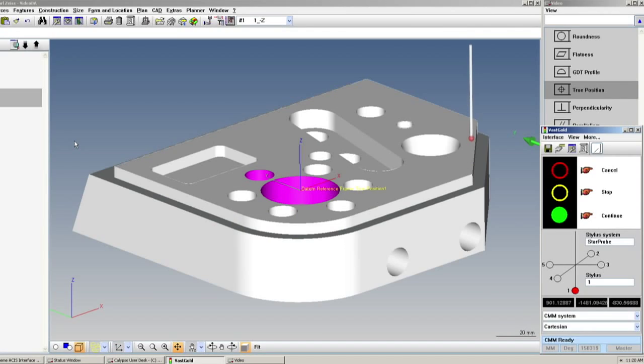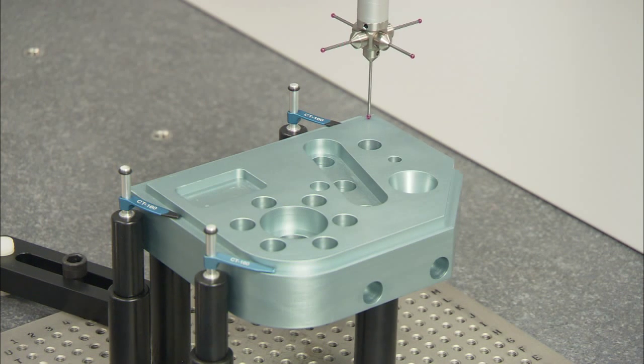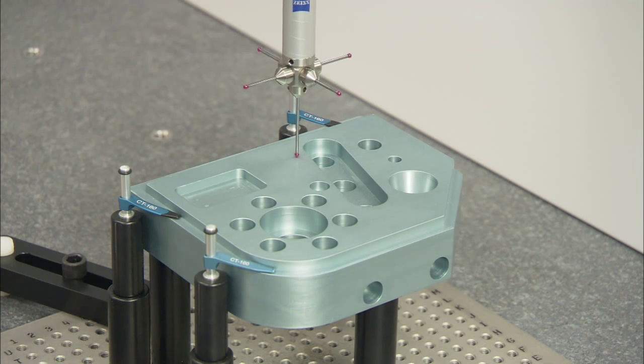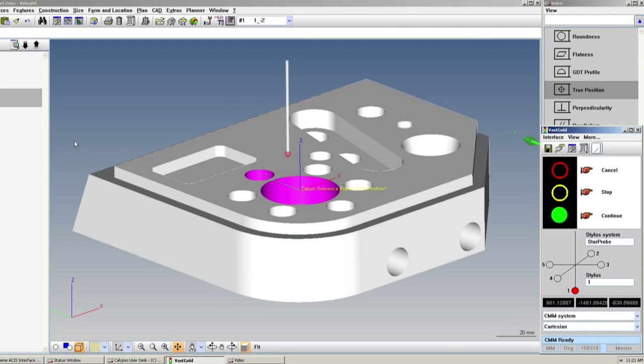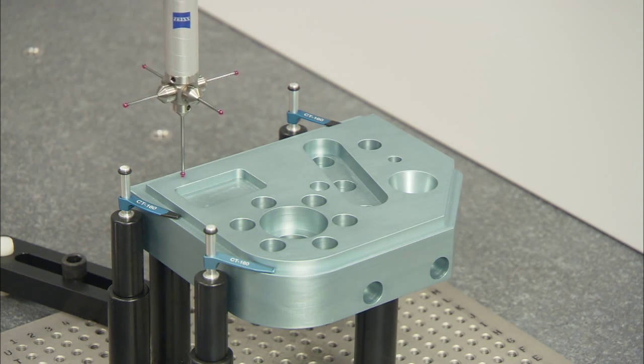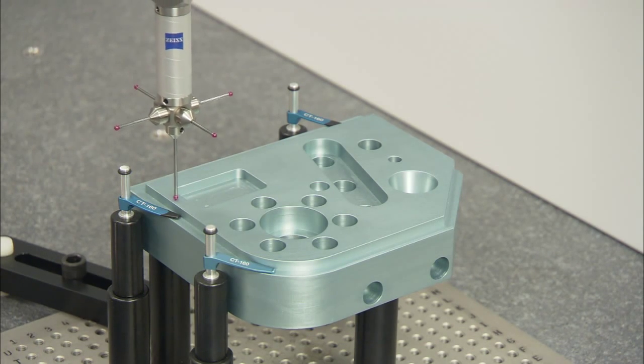When you input your parts and set up the desired characteristics, Calypso takes care of many of the details for you. Based on the aspect being measured and the type of feature, it recommends optimal settings for probe speed and data density. This saves time and assures reliable results.